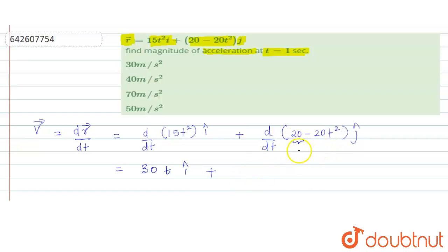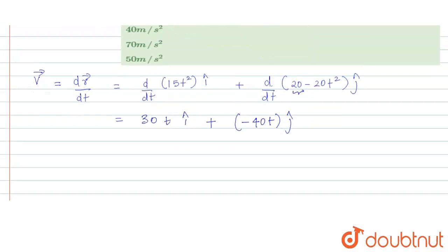So its differentiation would be 0, and this is minus 20 times 2, which is minus 40t ĵ. So this is what the velocity vector is.